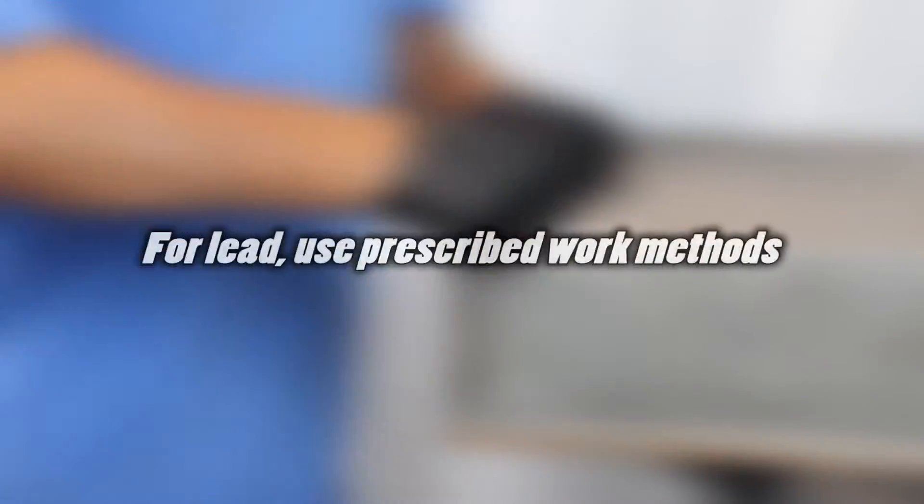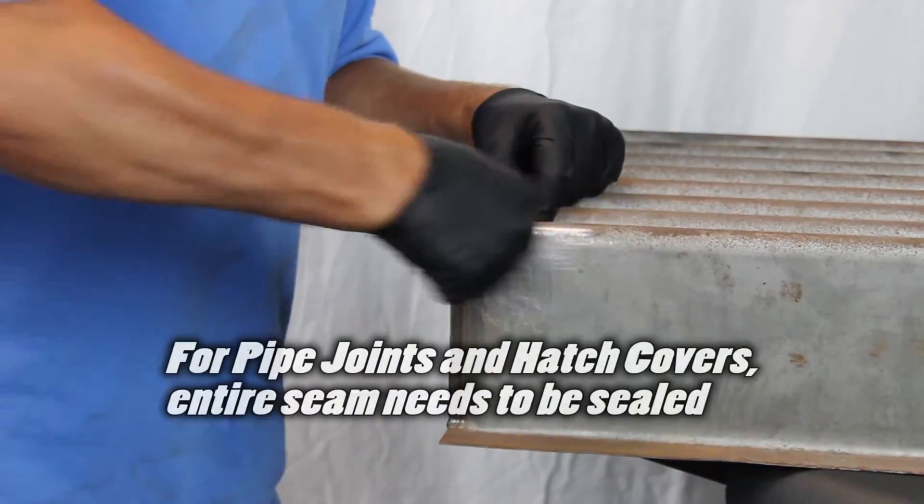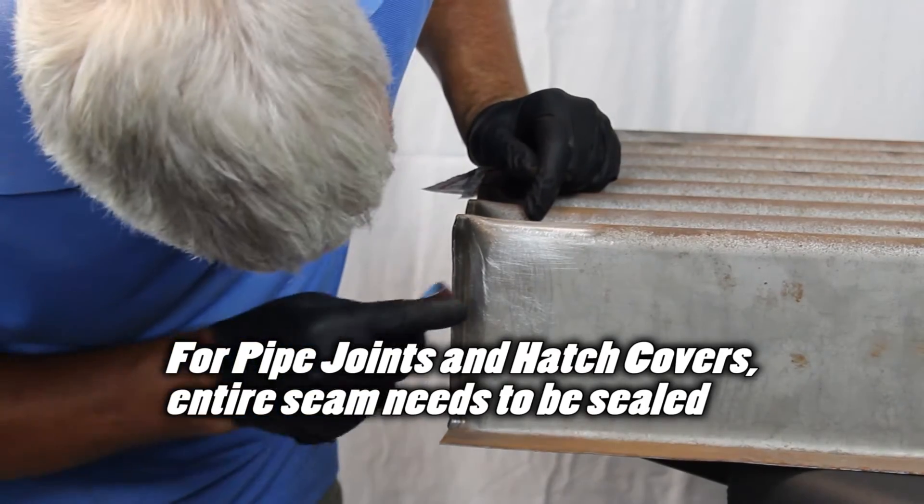For lead, use prescribed work methods. For pipe joints or hatch covers, the entire seam needs to be sealed.